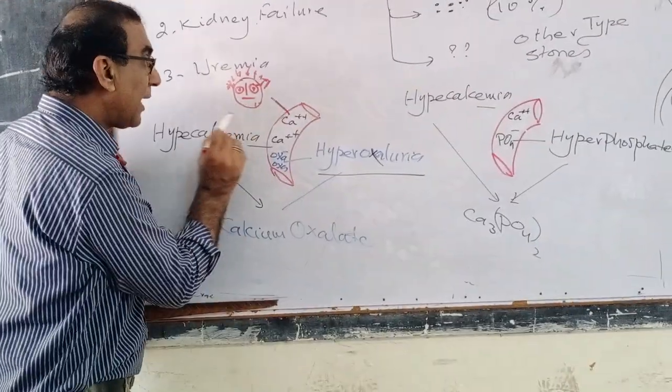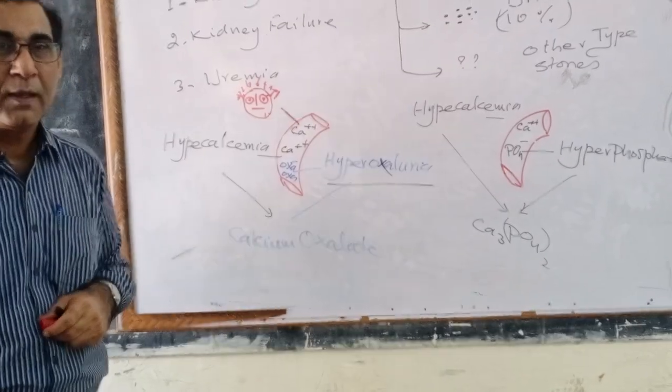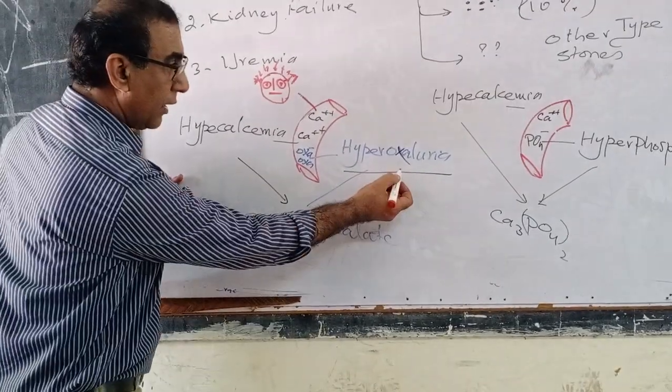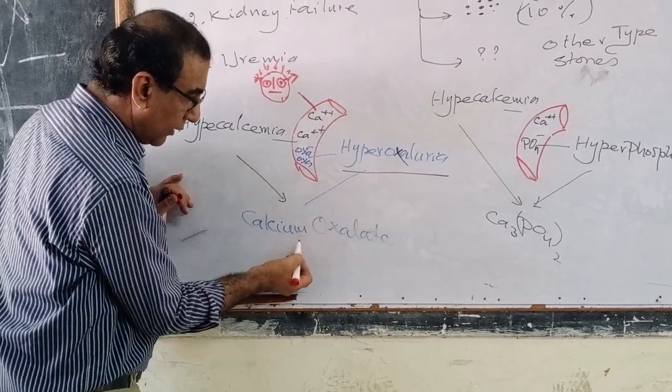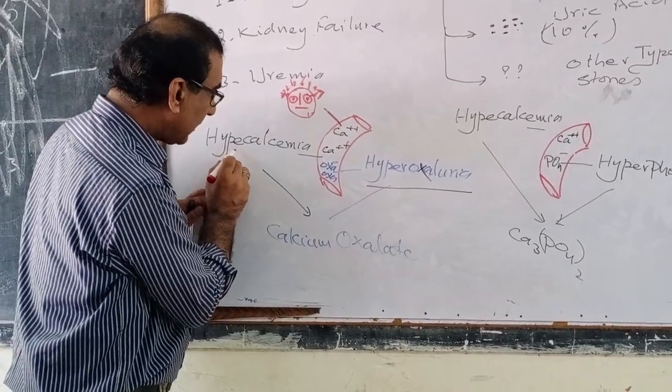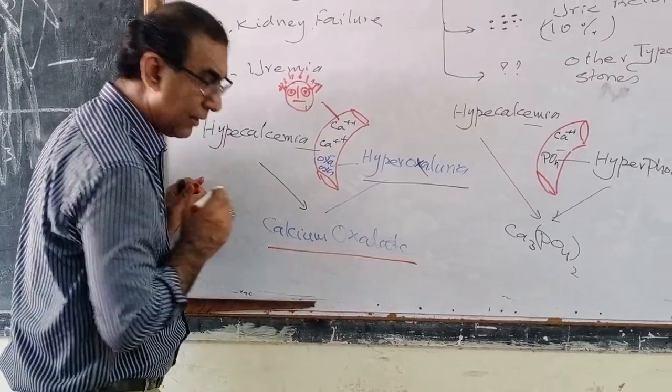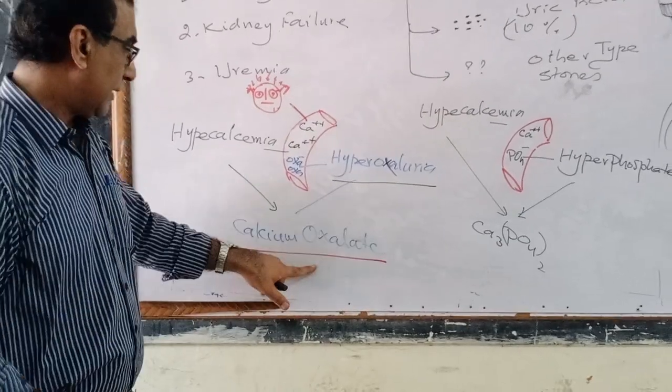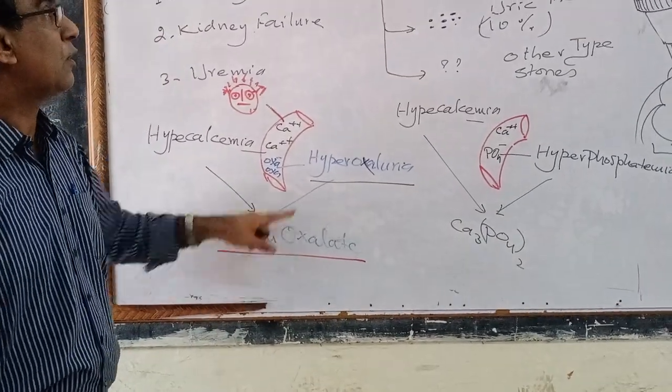Now, the result is what? Oxalate in your blood and calcium, they combine together and they form this stone, calcium oxalate stone.